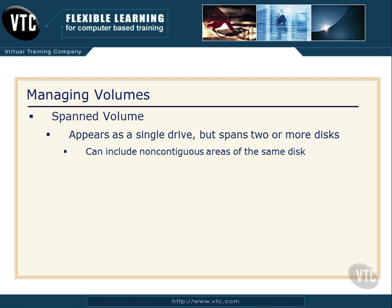Non-contiguous is a big word, and it means that the two areas are not sitting side by side — they can be separated by something. The space on each disk can also be different sizes.